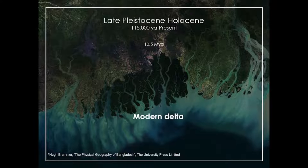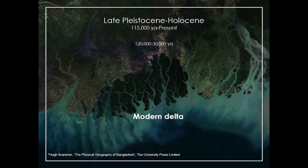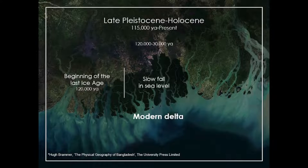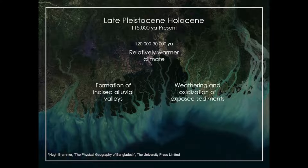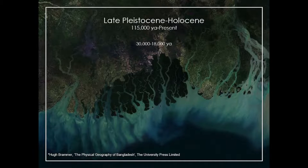The modern delta began to appear approximately 10.5 million years ago, although significant changes didn't occur until the Quaternary period. About 120,000 years ago, at the beginning of the last ice age, the sea level started to fall slowly. At that time, the climate was relatively warmer. Rivers cut deeper into the existing landscape to form incised alluvial valleys, and the exposed sediments became weathered and oxidized.